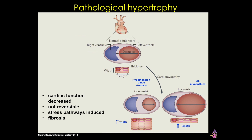Hypertrophy is a great example of how cellular modifications can help an organ adapt to changes, but under continual assault or stress, similar processes can lead to dysfunction and disease.